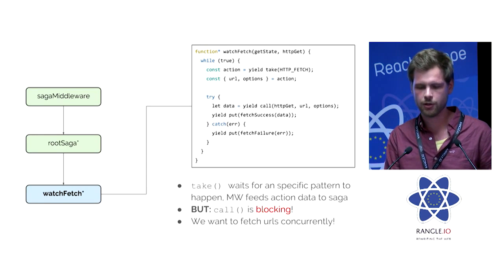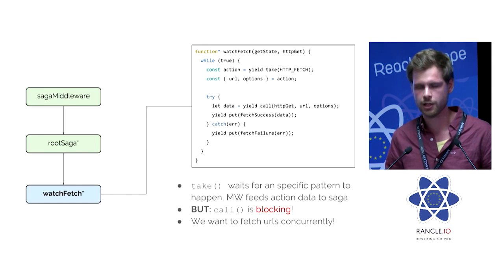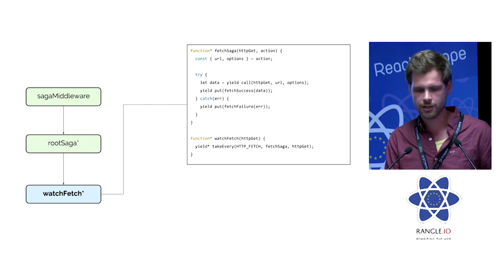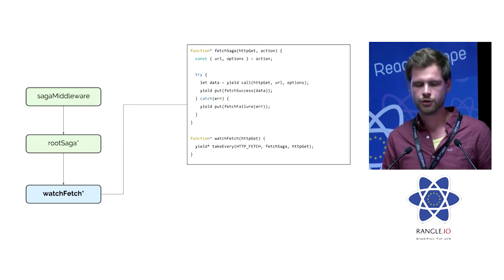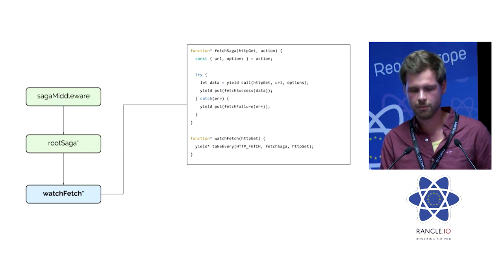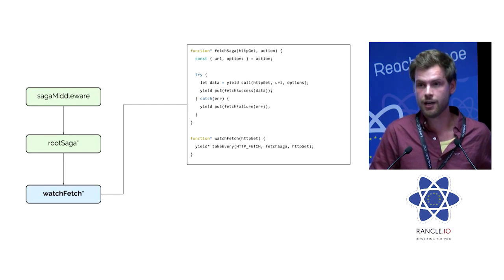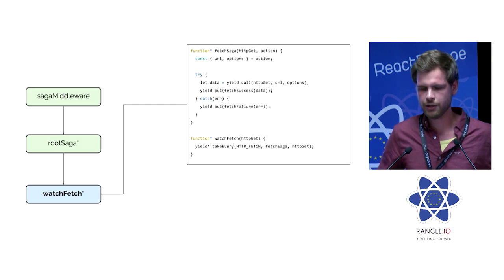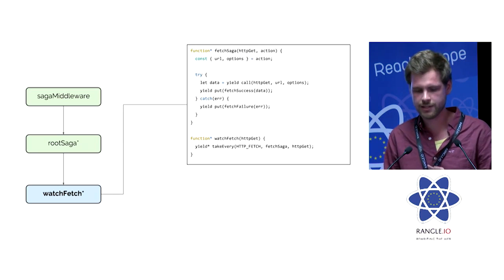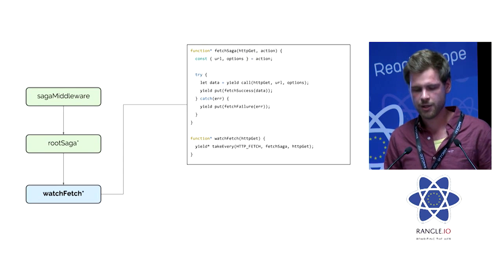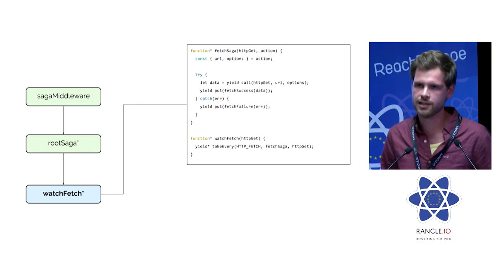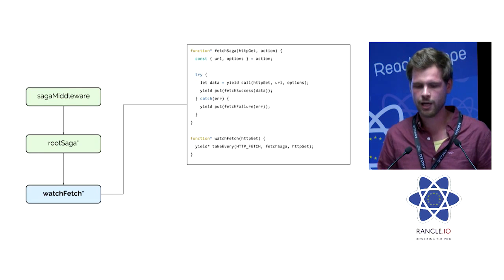The problem is this function would block because the call resolves first and then puts — we want to make this non-blocking. Therefore you have utility functions like 'takeEvery', which you can see at the bottom. takeEvery is basically a wrapper that says: whenever you get an HTTP_FETCH action, fork me a new fetch saga. It also provides the action already fetched, so if the store dispatches an HTTP_FETCH you get the action in the fetch saga as a last parameter, then you do your thing and everything is nice.